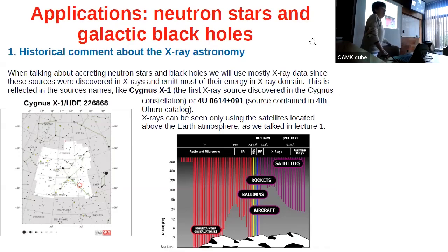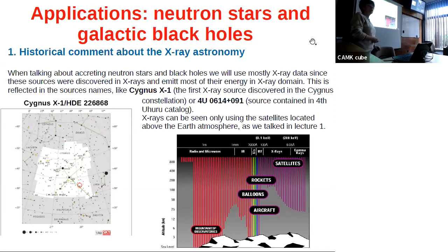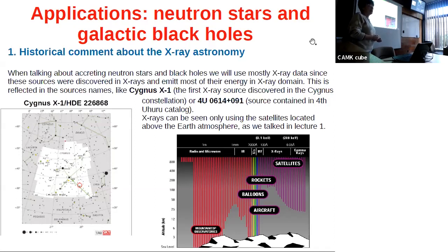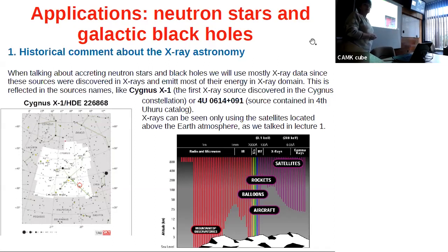Today we will have a second lecture in the series of summary lectures. This lecture will be devoted to the creation of neutron stars and galactic black holes. The last lecture will be on AGN in February. We observe those sources mostly in x-rays.